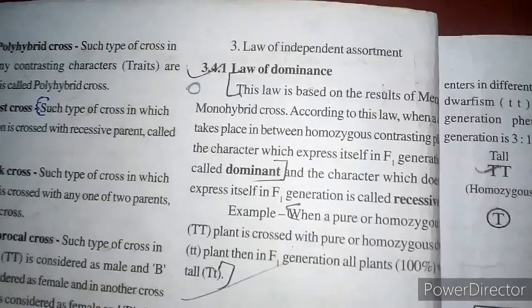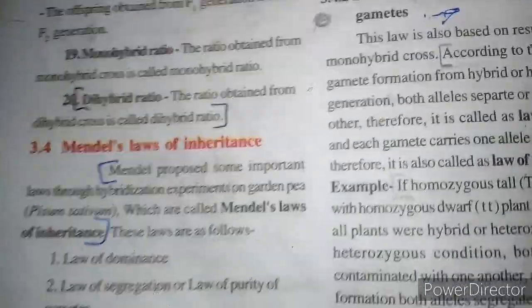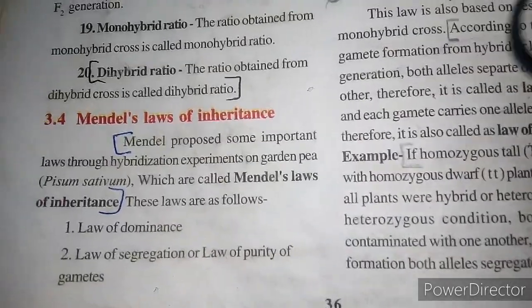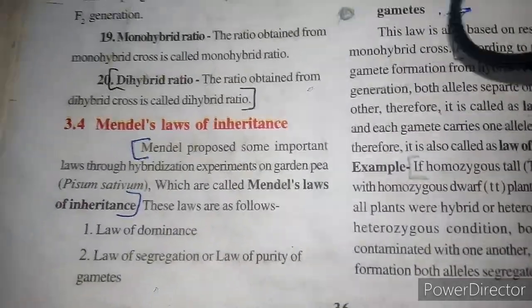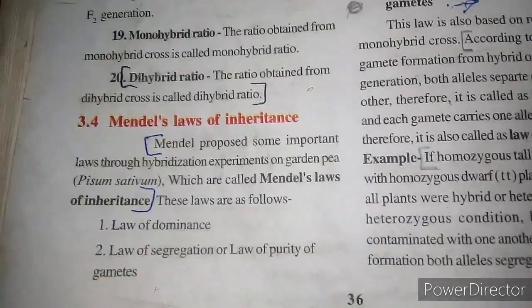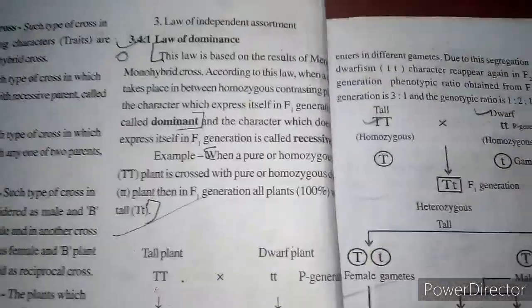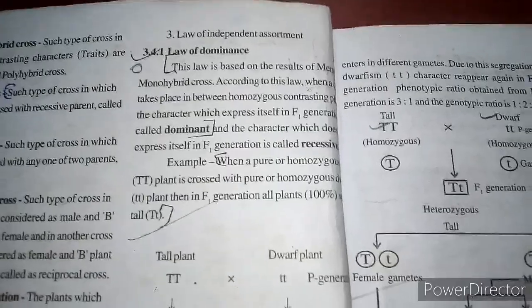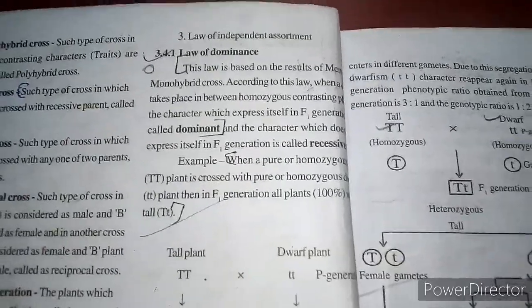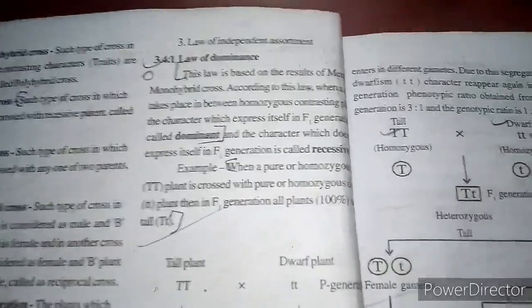Today I will discuss the first law — the law of dominance — and the second law — the law of segregation, also known as the purity of gametes. We will discuss both of these. The third part, the law of independent assortment, will be discussed in the next video. So let's get started with the law of dominance.